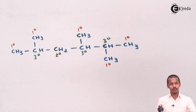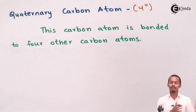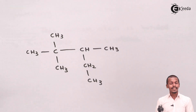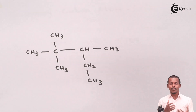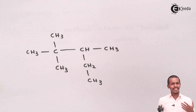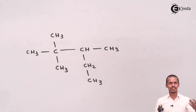Now for the fourth type — a quaternary carbon atom is bonded to four other carbon atoms. It is very essential to first bifurcate primary, then secondary, then tertiary, before identifying quaternary. We will go in order: primary, secondary, tertiary, and quaternary.